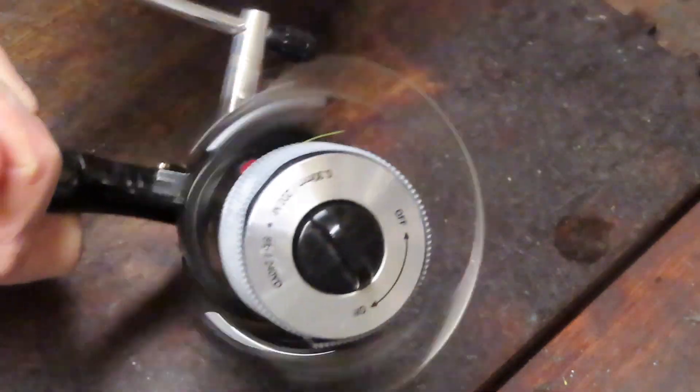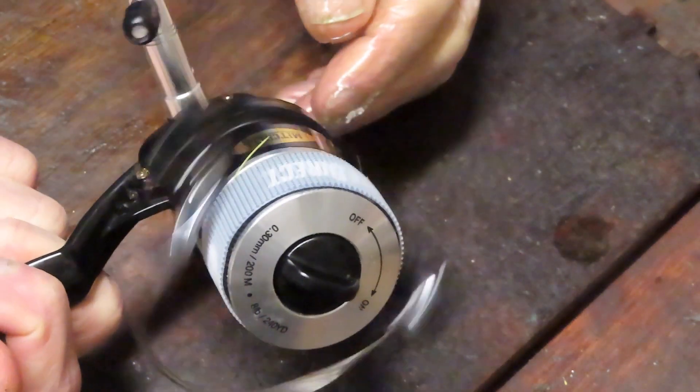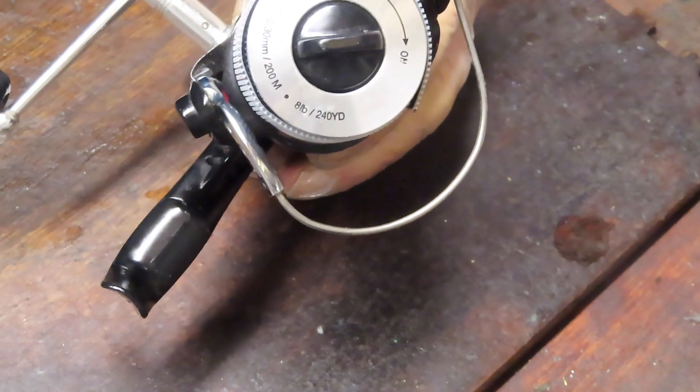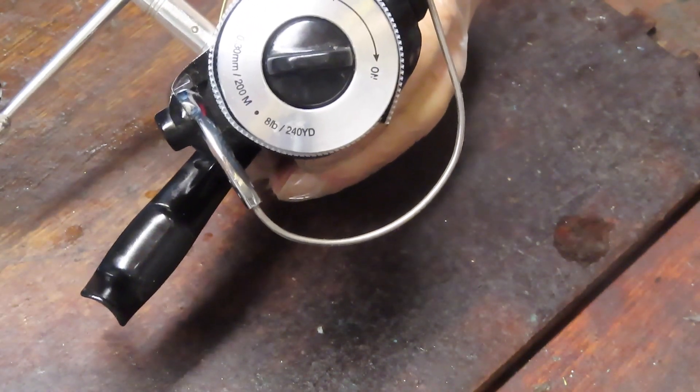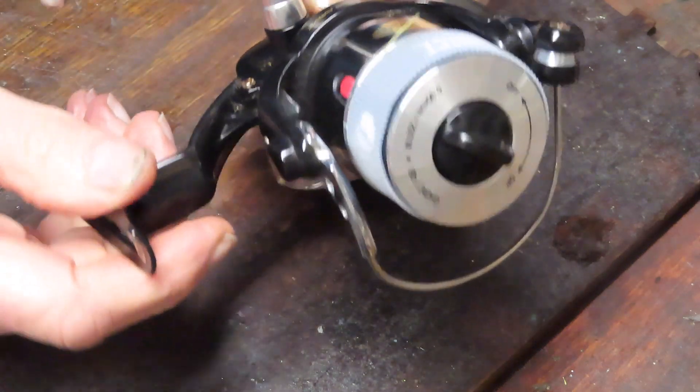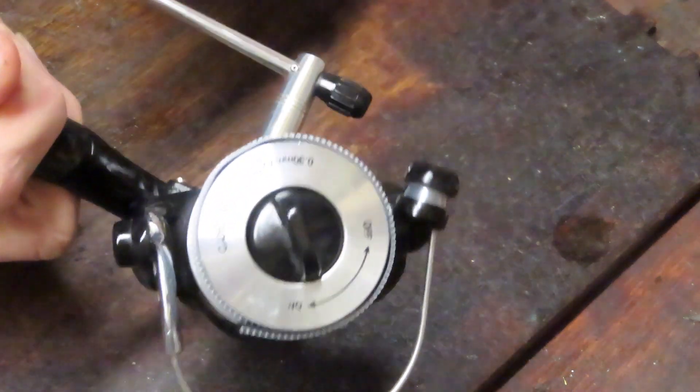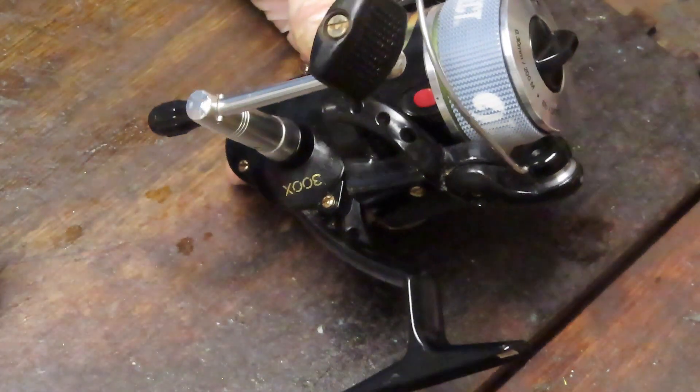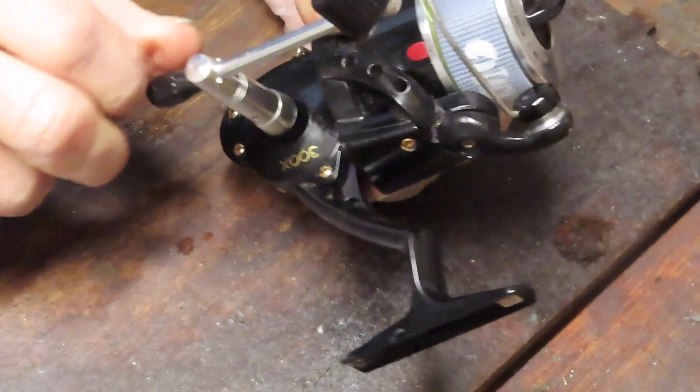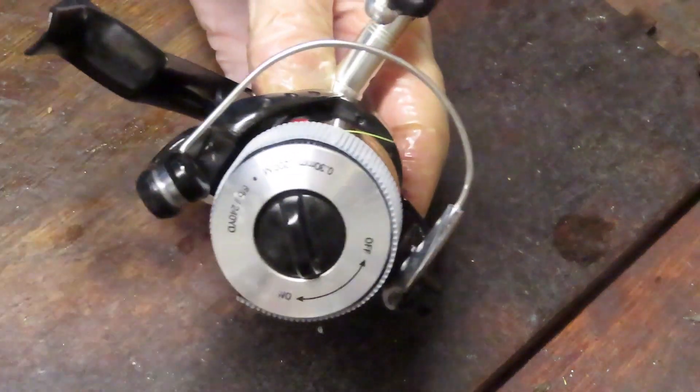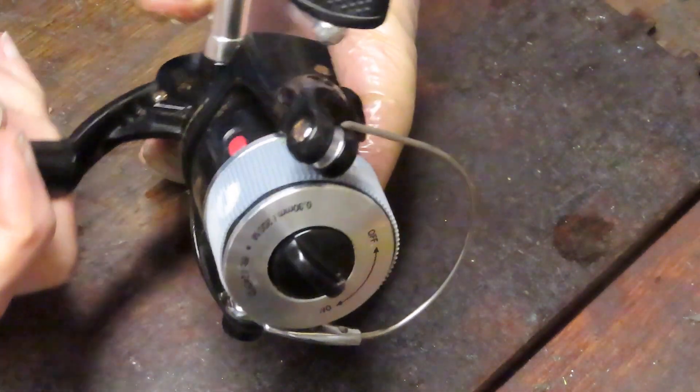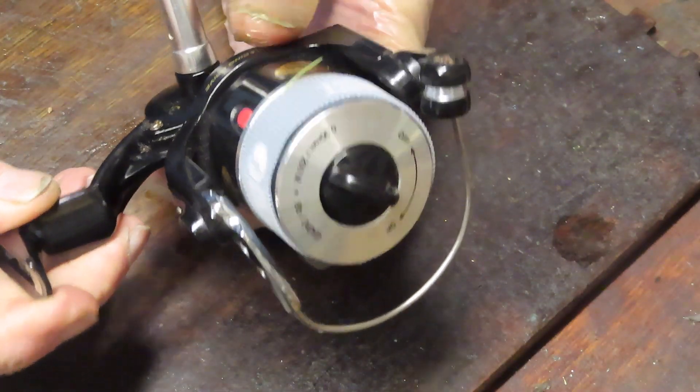When James sent this in, he sent it in because there's no anti-reverse. So the first thing you want to do from a problem diagnosis is find out how this reel is made. This reel has an instant anti-reverse up top under the rotor. You want to see what parts could be affected and what is failing in the reel. This is an example of how saltwater can cause a reel to fail, and we'll talk about best practices for dealing with saltwater.